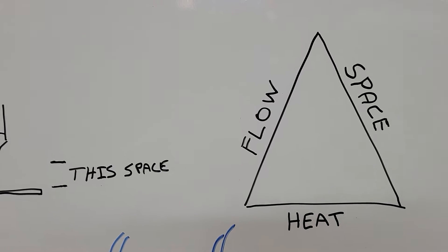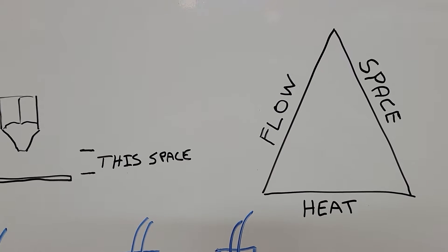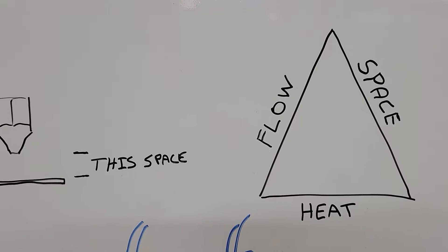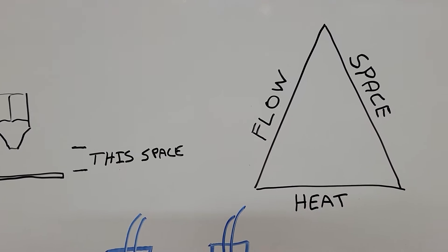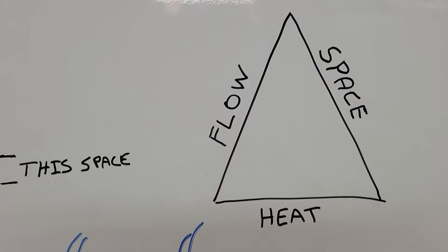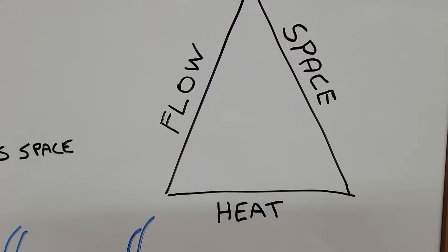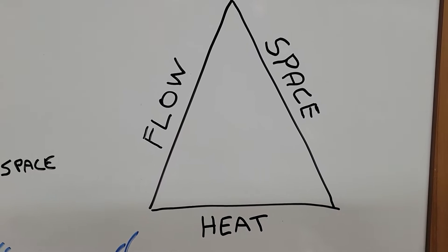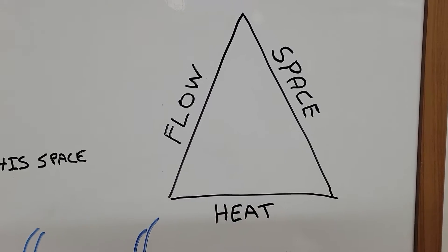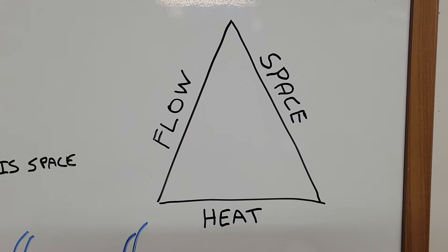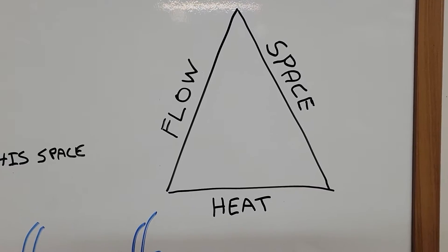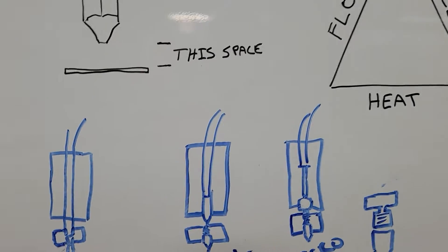So it came to my mind that there's three things you need for successful printing. And that is flow, space, and heat. If you have a problem with your printer, you're going to take a look at this chart and figure which one of these three things is causing your problem. Do you have a flow problem, a space problem, or a heat problem?